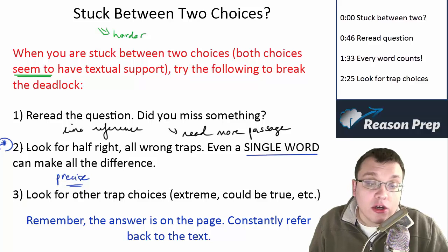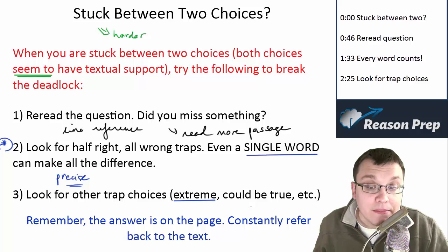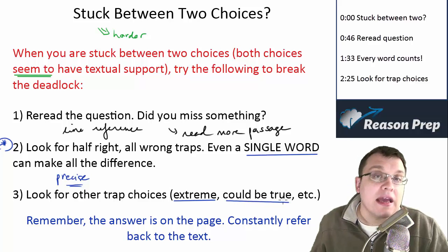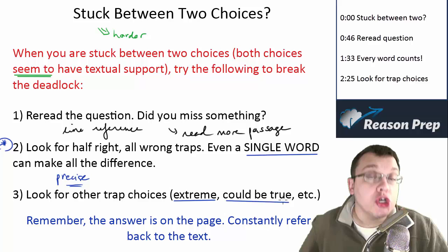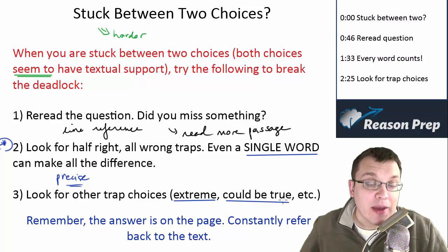Finally, you can also, besides looking for half-right or wrong, look for other trap choices to maybe help you figure out an error that you might be making in reasoning. So is the choice, for example, too extreme? Are you making assumptions or thinking about what could be true in the passage rather than what is true, what is stated in the passage?